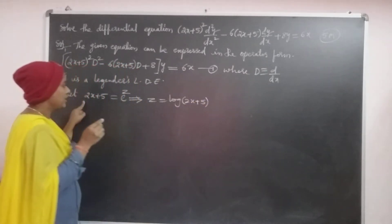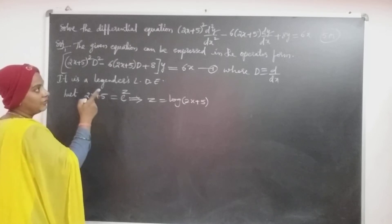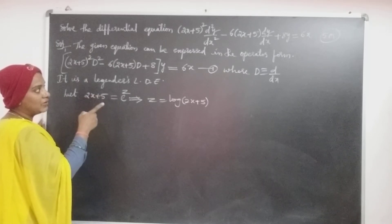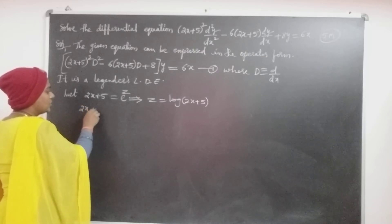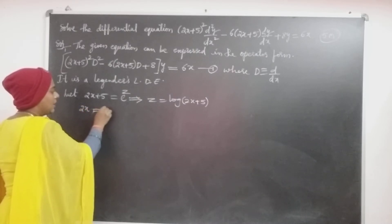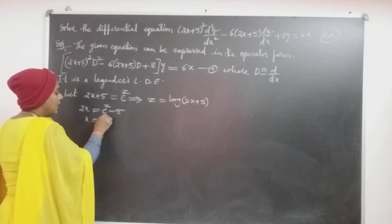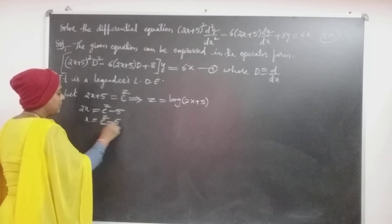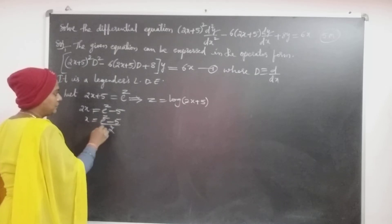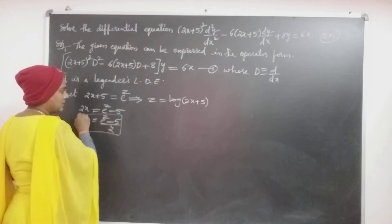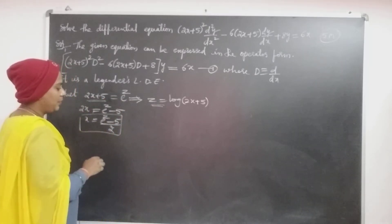From this, the given Q(x) is equal to x. From this, what is the value of x: 2x = e^z minus 5, so x = (e^z minus 5) / 2. This is the x value, and 2x + 5 = e^z.